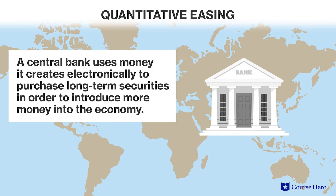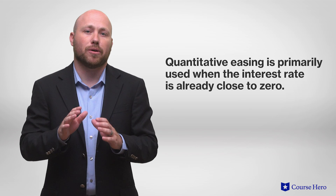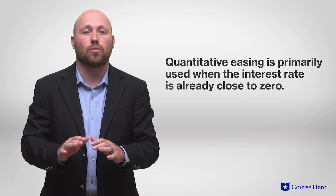The Fed has recently developed new methods of pursuing expansionary monetary policy, one of which is quantitative easing, in which a central bank uses money it creates electronically to purchase long-term securities in order to introduce more money into the economy. Whereas an open market policy attempts to decrease the interest rate, quantitative easing is primarily used when the interest rate is already close to zero. The goal of quantitative easing is to increase the number of loans, not decrease the interest rate.